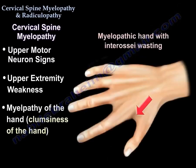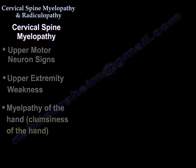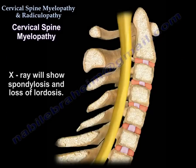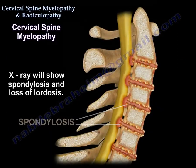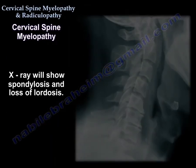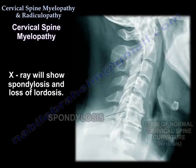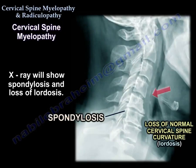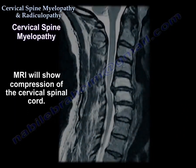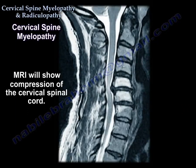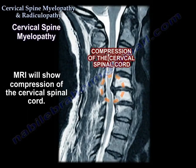The X-ray will show spondylosis and loss of lordosis. MRI will show compression of the cervical spinal cord.